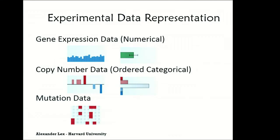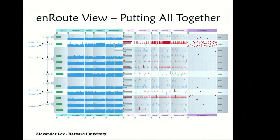And for mutation data, we decided to go for a binary representation, because at this point, we're only looking at is a gene mutated or not. And this is very space efficient. And as an abstract version, we again use a histogram. And this is how the enRoute view looks all together.